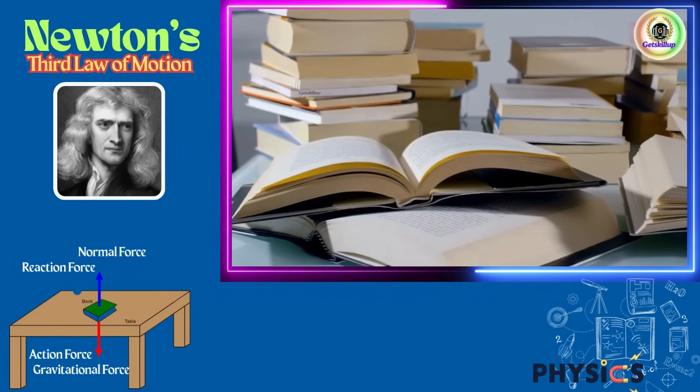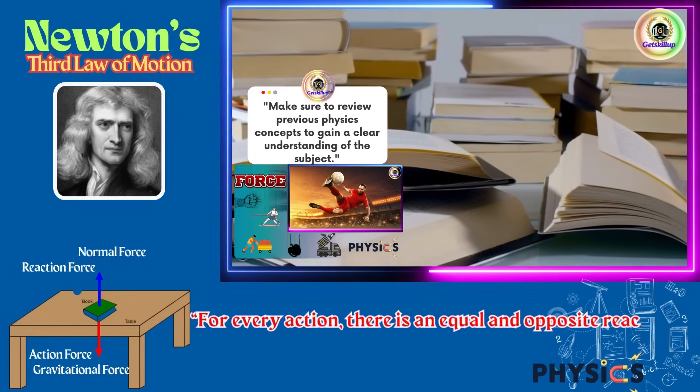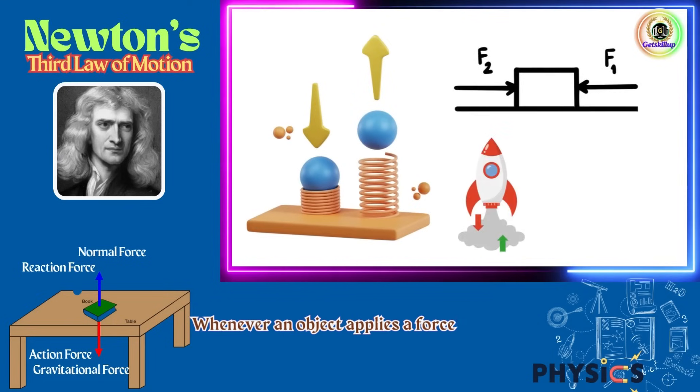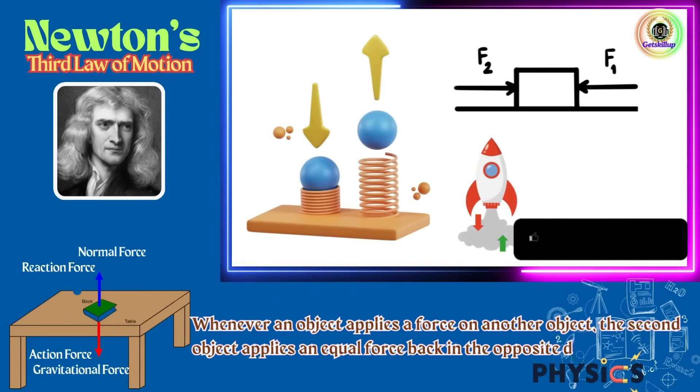Newton's third law of motion definition: For every action, there is an equal and opposite reaction. In simple words, whenever an object applies a force on another object, the second object applies an equal force back in the opposite direction.